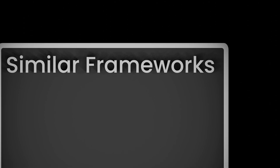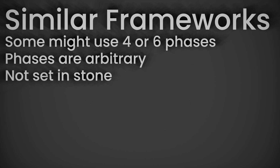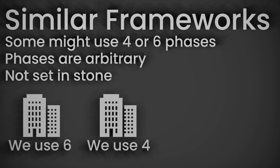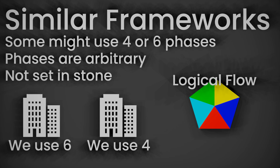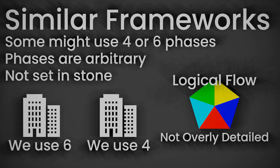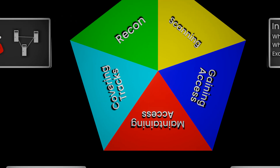Some frameworks might use 4 or 6 phases. The phases are somewhat arbitrary and can vary based on the source or specific methodology — they are not set in stone and may differ between cybersecurity companies. We use 5 phases because the breakdown provides a logical flow for how ethical hacking activities usually unfold, and it is large enough to cover all essential activities without being too detailed.